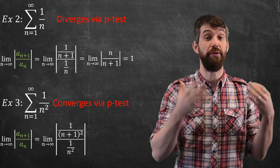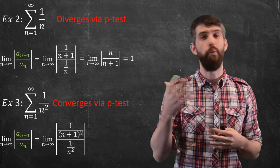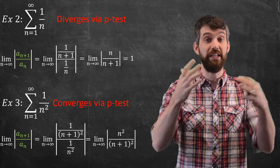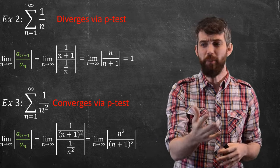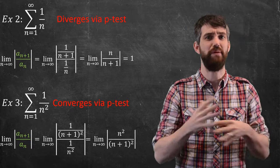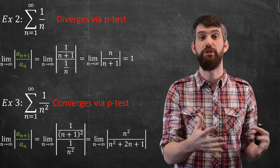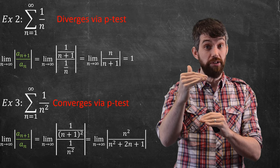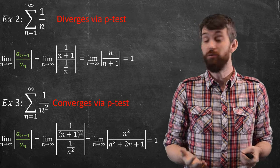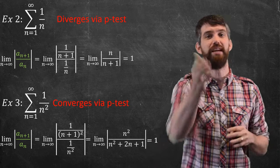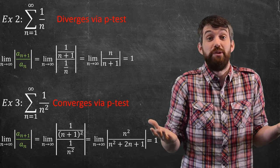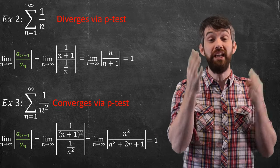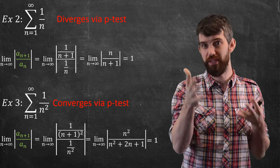Likewise for 1/n²: a_{n+1}/a_n is 1/(n+1)² divided by 1/n², which gives n²/(n+1)². Expanding the denominator gives n²+2n+1. Highest power on top is n², highest power on bottom is n², so its limit is also 1. In this case the ratio test is useless — it doesn't tell me either way. Both limits appear to be 1, yet the first series diverges and the second converges. So the ratio test is indeed inconclusive when the limit of the ratio equals 1.